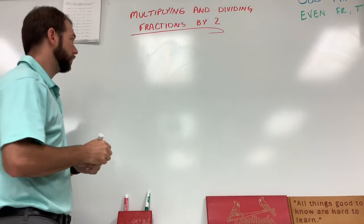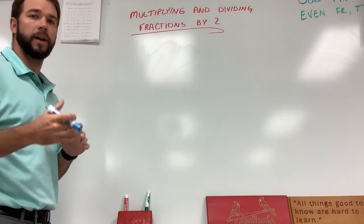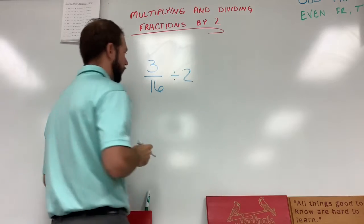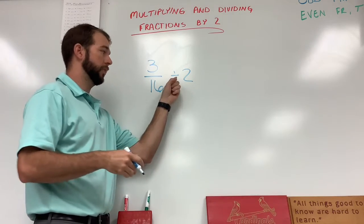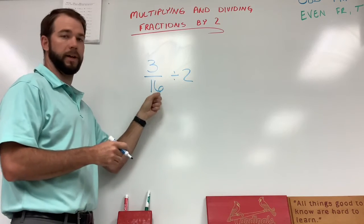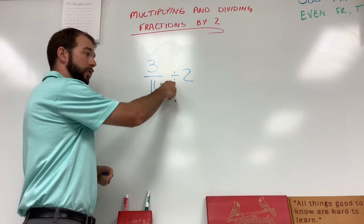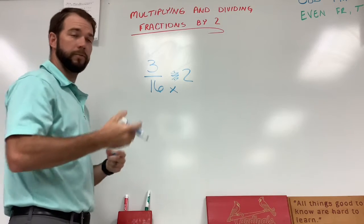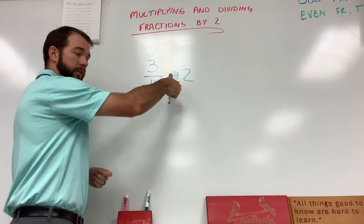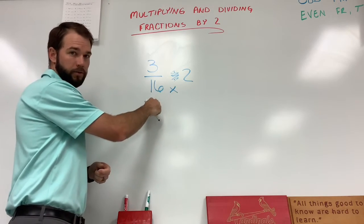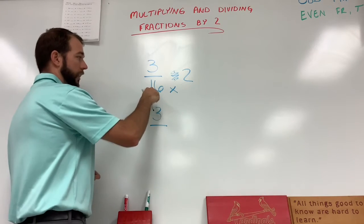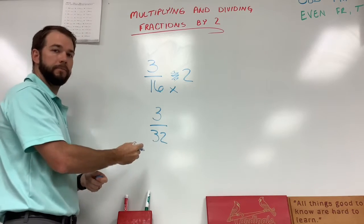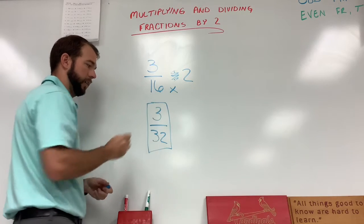Now let's do some dividing by two — just a fraction divided by two first. Let's start with three sixteenths divided by two. When we were multiplying, it turned the multiplying symbol into a division symbol for the bottom number. We're going to do the opposite now: we have a division sign, we cross that out, and now we multiply that bottom number by two. So the top number stays the same as a three, and we do sixteen times two to get three thirty-seconds. Odd number on top, even number on bottom — it's simplified, and our answer is finished.